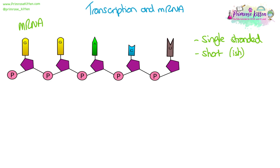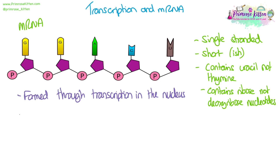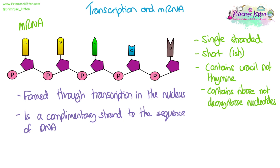Let's remind ourselves of the structure of mRNA. So it's single-stranded, it is short-ish — that will depend on the length of sequence we need for the protein that we're trying to make, but it's obviously a lot shorter than the entire DNA molecule. It contains uracil and not thymine bases as part of its nucleotides, and those nucleotides contain the ribose sugar and not the deoxyribose sugar. mRNA is formed in the nucleus through the process of transcription, and it's complementary to the sequence of DNA that it codes for in terms of what the protein code is.